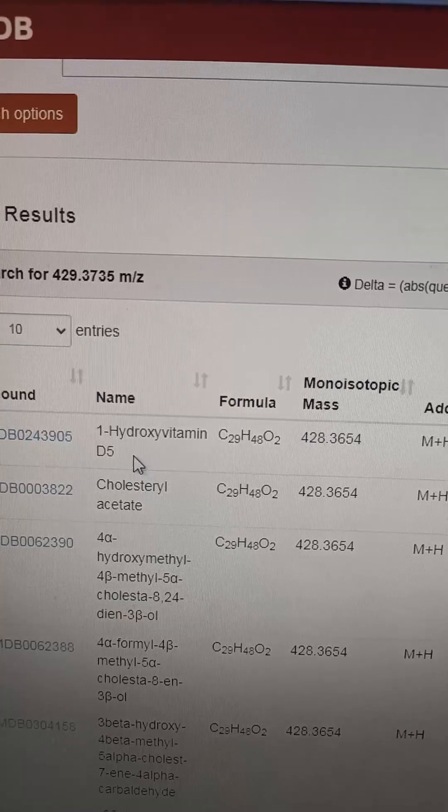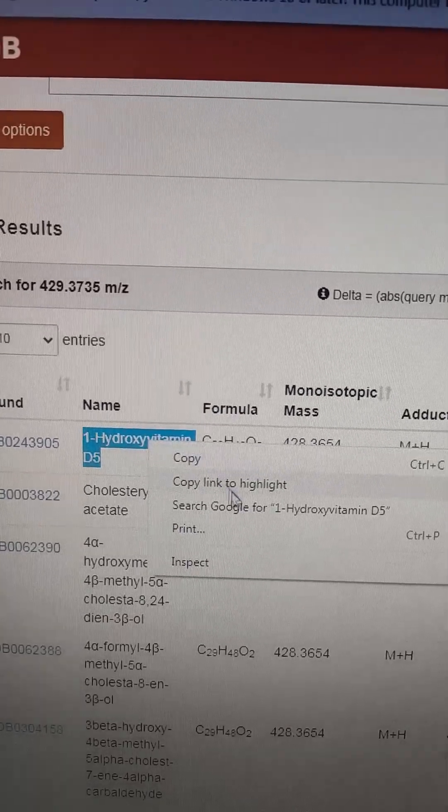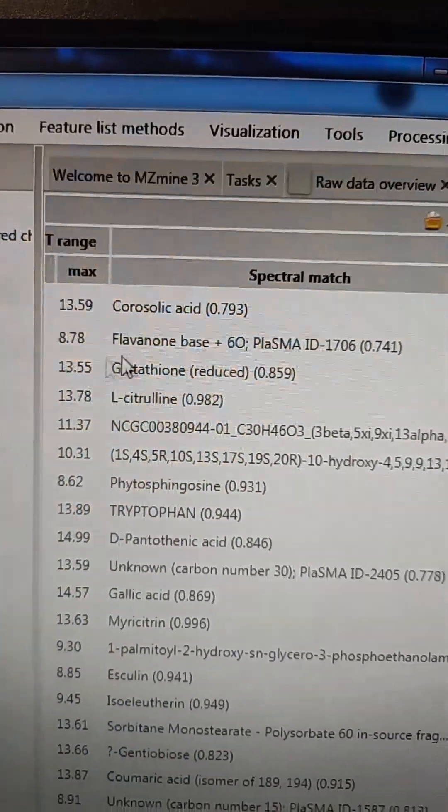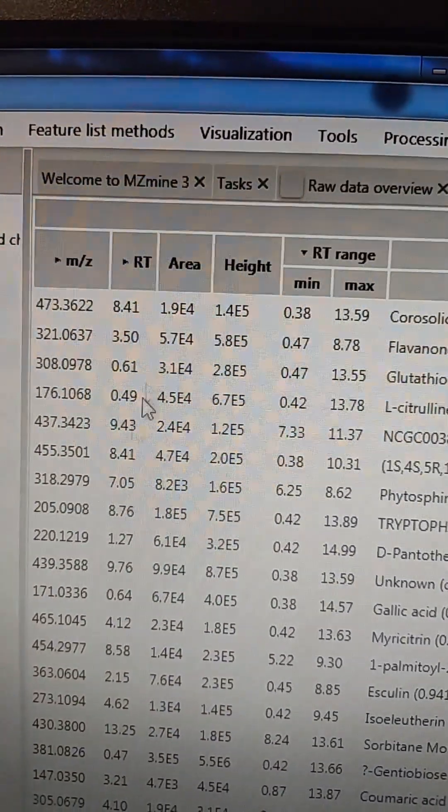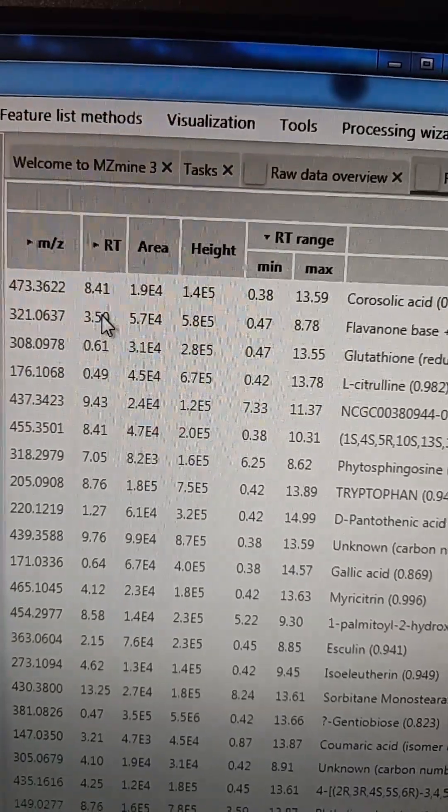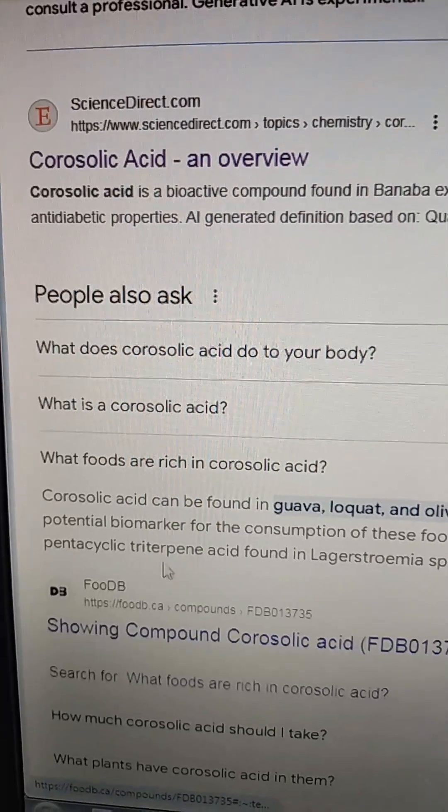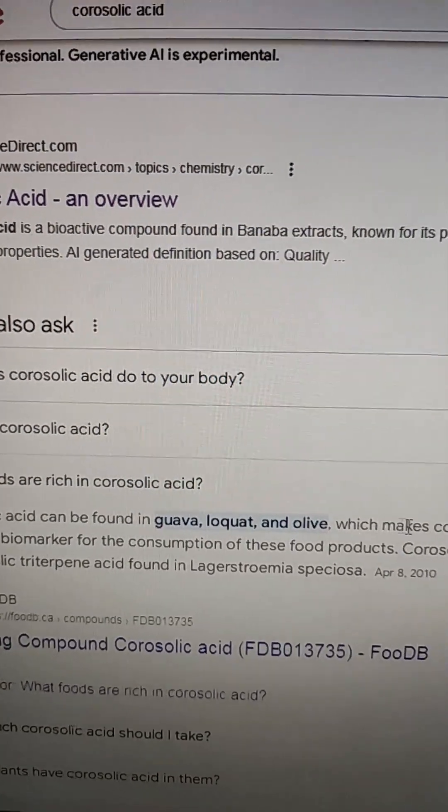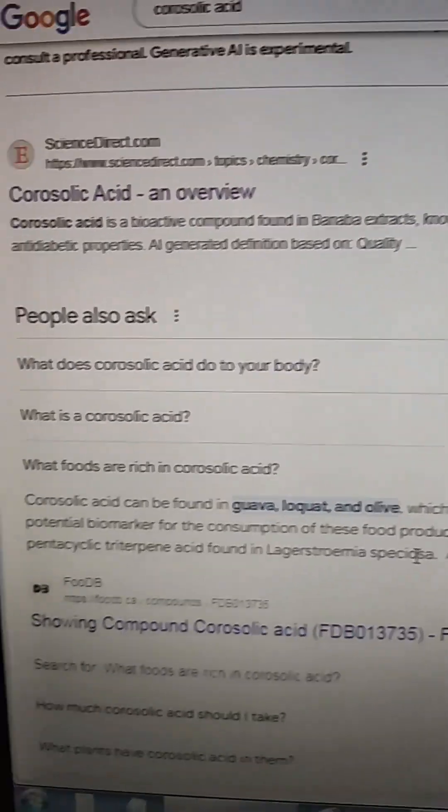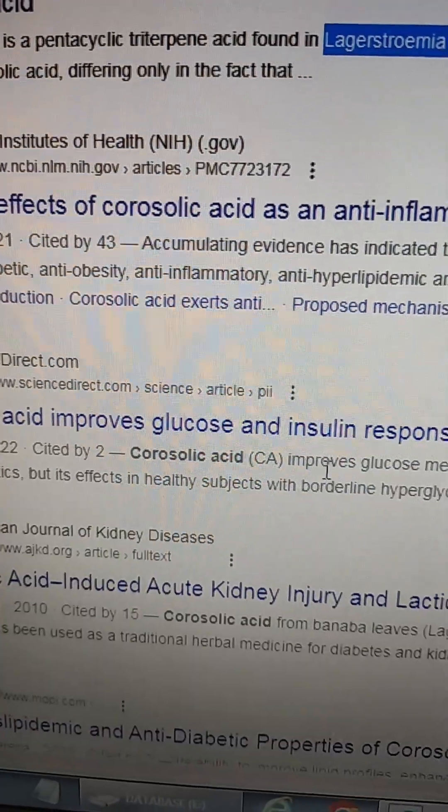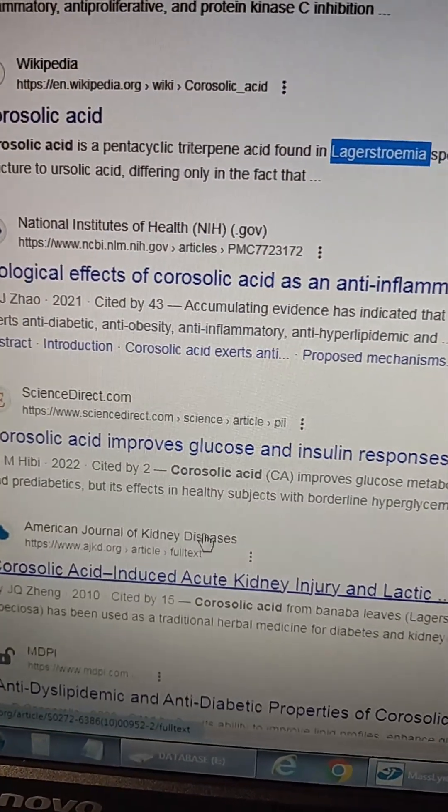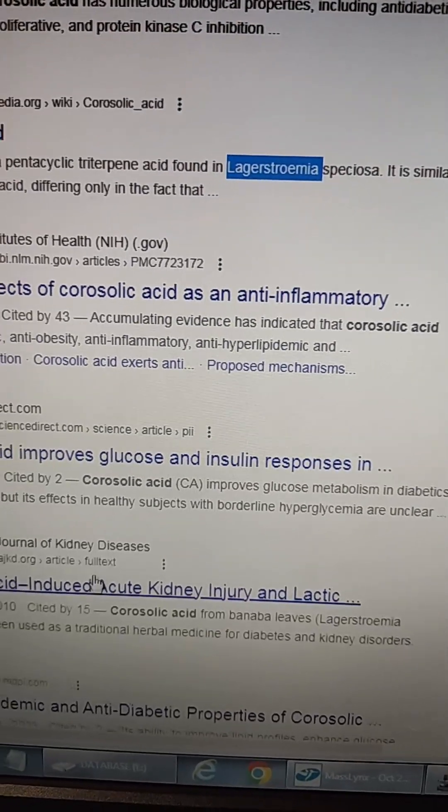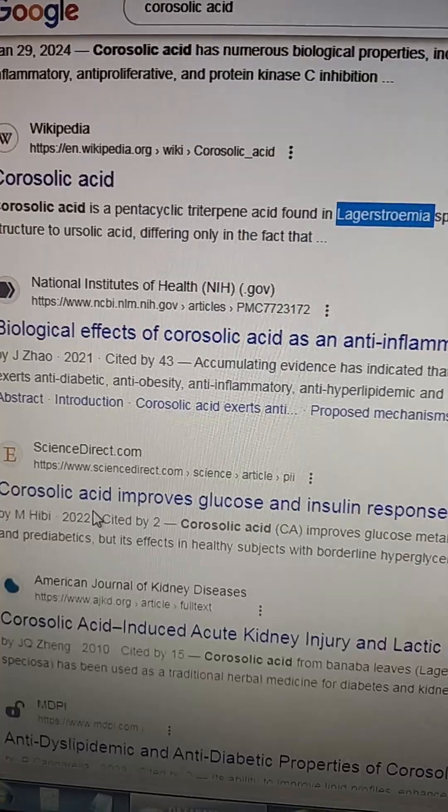That peak at 429 is the hydroxy vitamin D5. So top hit is corosolic acid, 21 matched fragments. That is at 4.73, retention time at 3.4 minutes. There's a pretty good amount of this stuff in there. Foods that are rich in corosolic acid are guava, loquat, and olives, but I'm seeing it in persimmon. Very interesting. So corosolic acid improves glucose metabolism and diabetes and pre-diabetes, healthy subject hormonal hypoglycemia. So this seems like it's like a really healthy... Hey, you gotta start eating more persimmon.